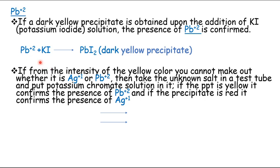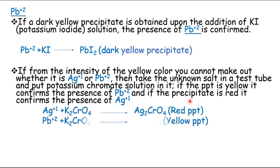We have got yellow-colored precipitates in the case of silver as well as lead. If from the intensity of the yellow color we cannot determine whether it is silver ion or lead ion, then we put potassium chromate solution into the unknown salt. If the precipitate retains yellow color, it confirms the presence of lead ion. If the precipitate is red, we predict that the ion present is silver ion.